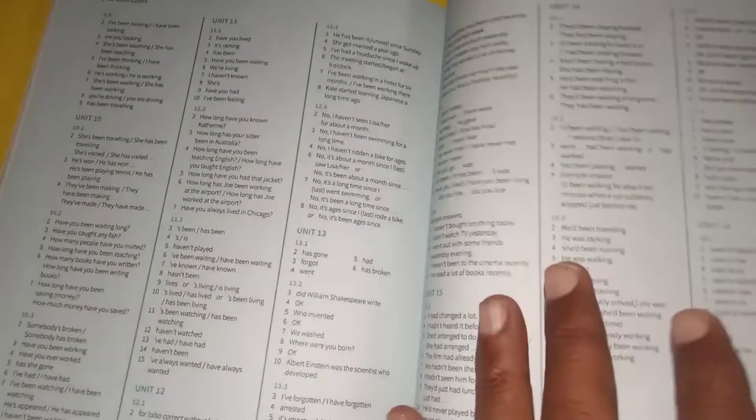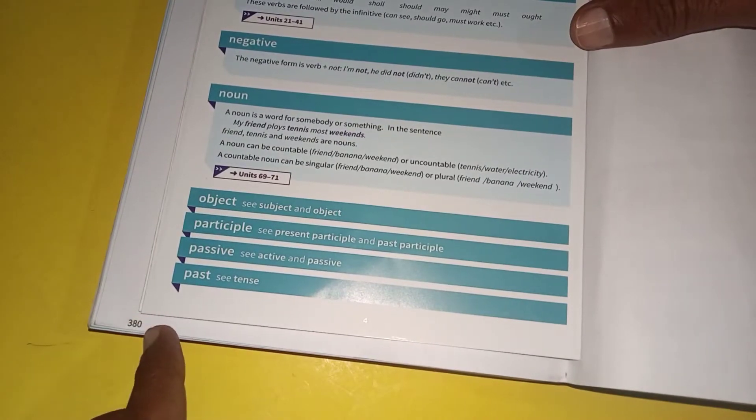Very colorful pages throughout. It also has an amazing leaflet — a glossary of grammar points that are described in this book. Let's see how many pages there are: it has 380 pages, as shown here.